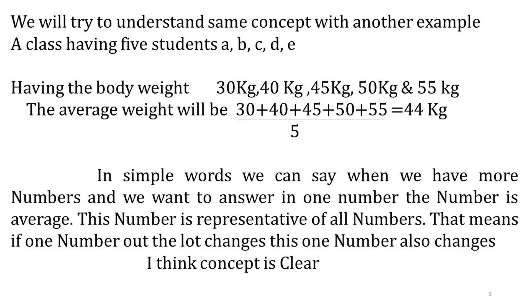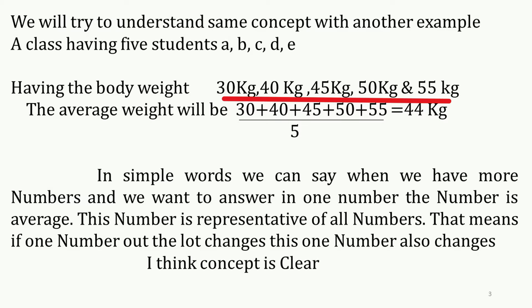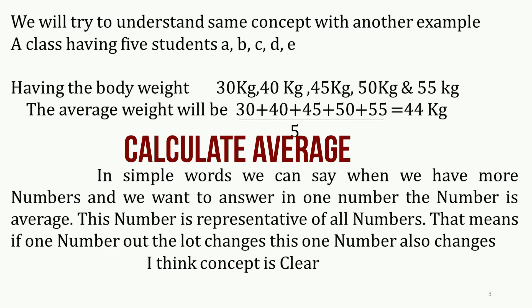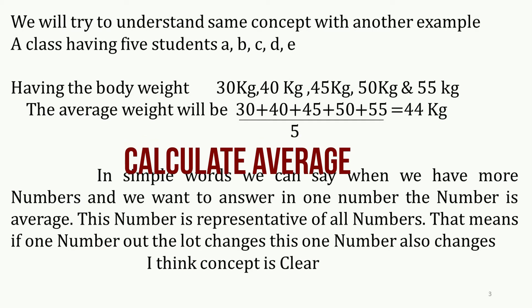Let us understand the same concept with another example. A class has five students A, B, C, D, and E with body weights of 30 kg, 40 kg, 45 kg, 50 kg, and 55 kg. We have to calculate the average. We add up the total weight: 30 + 40 + 45 + 50 + 55 divided by 5. The answer comes to 44 kg.